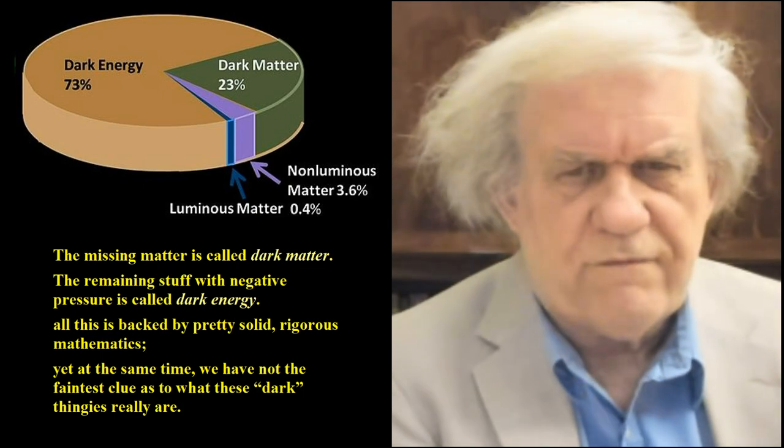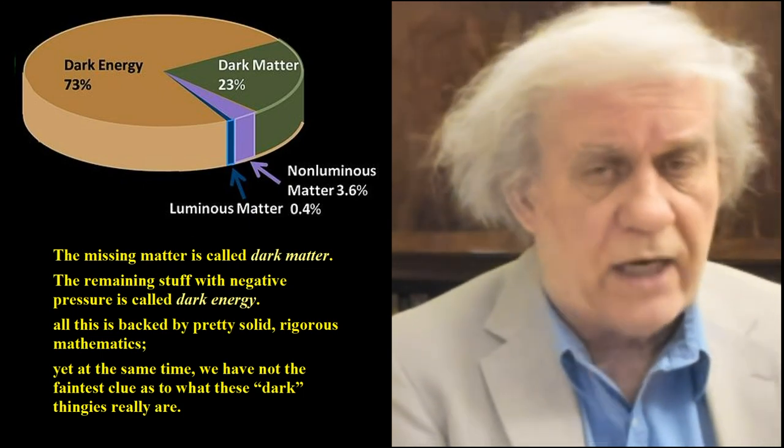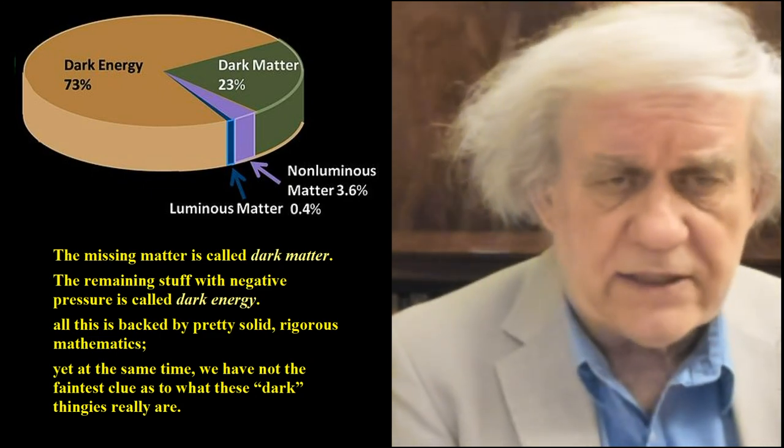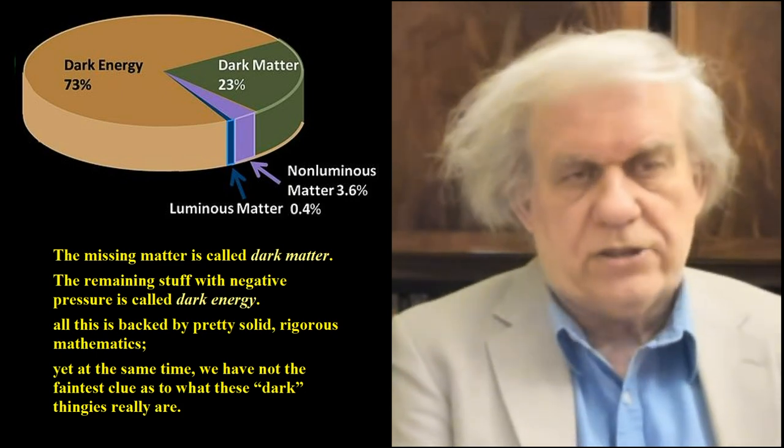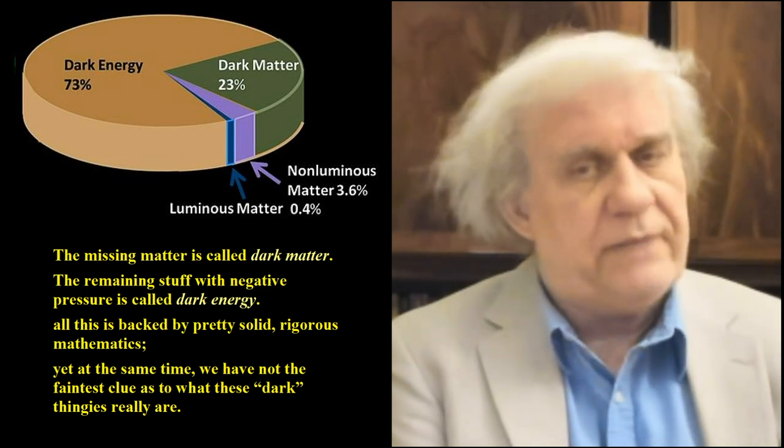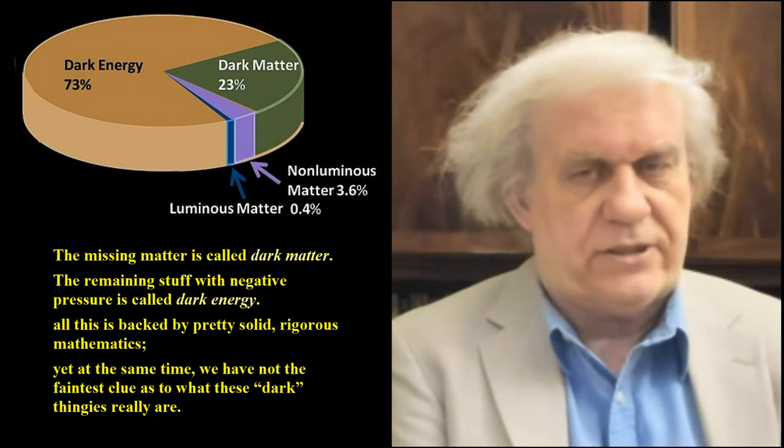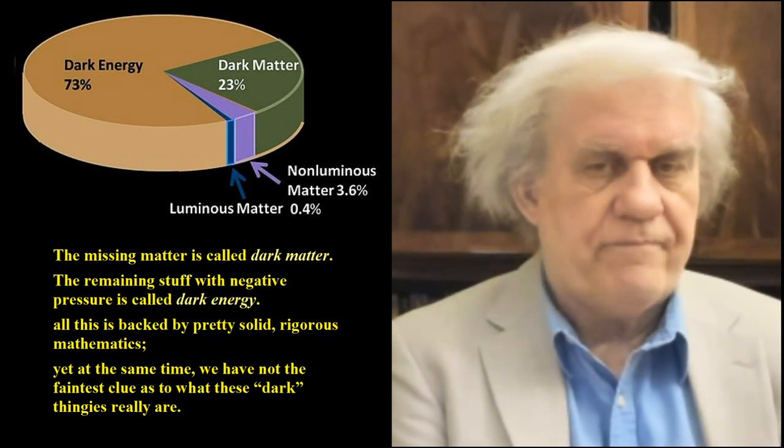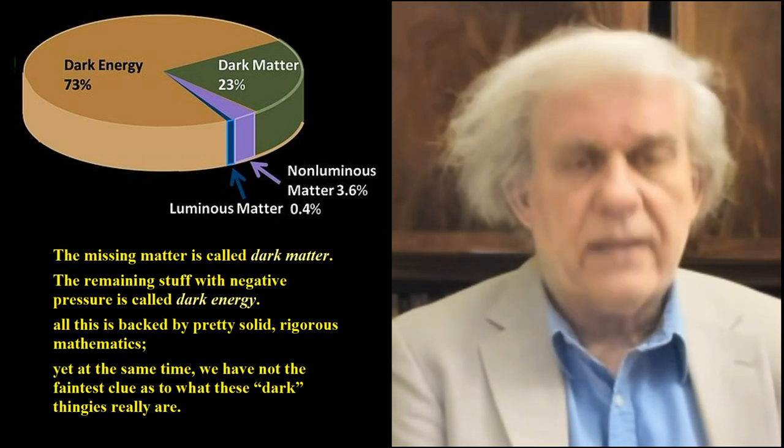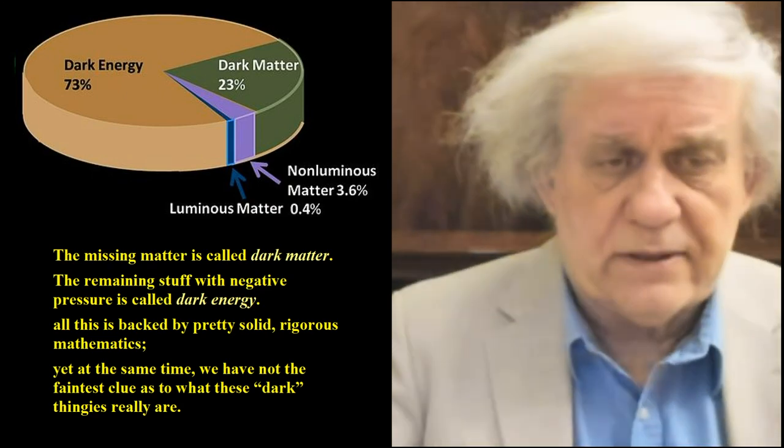He starts in one article, I think this was in Forbes, and he says, the missing matter is called dark matter. The remaining stuff with negative pressure is called dark energy. You can see dark energy is 73% of the ignorance we have of the universe. Dark matter is only 23% of the ignorance. That's 96% of the ignorance that the mathematicians have of the universe. The rest is what we can see, maybe even called touch, that 4% remaining there.